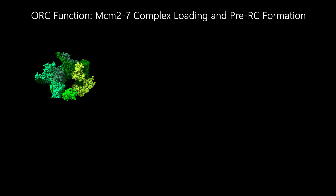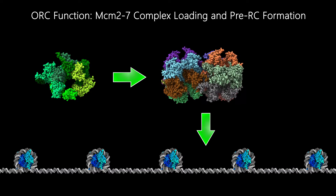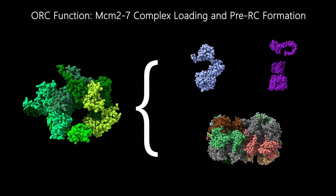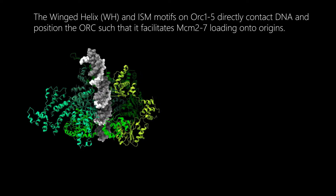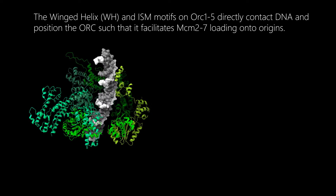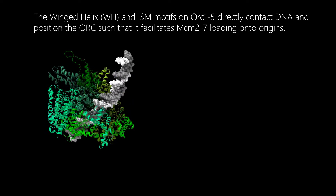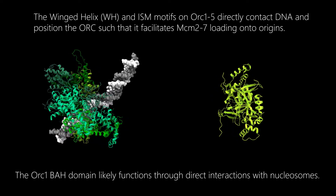The primary function of the ORC complex is to facilitate the loading of the MCM2-7 double hexamer onto replication origins. It serves as a scaffold for the recruitment of CDC6, CDT1, and the MCM2-7 complex in G1 phase. The ISM and winged helix domains on ORC subunits 1-5 directly contact DNA and position the ORC such that it facilitates MCM2-7 loading. The ORC1 BAH domain likely functions through direct interactions with nucleosomes.